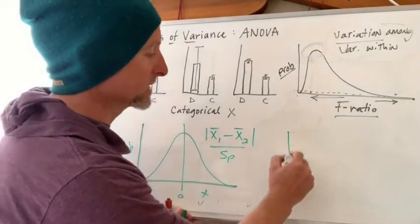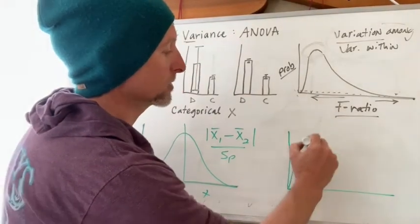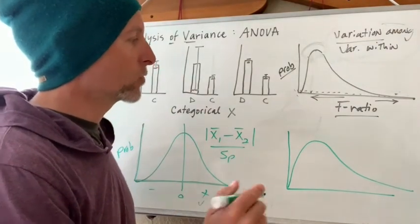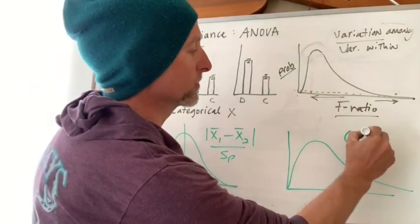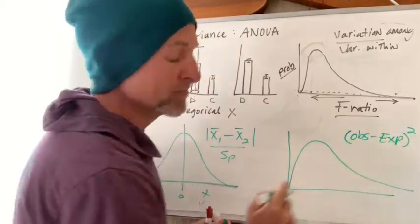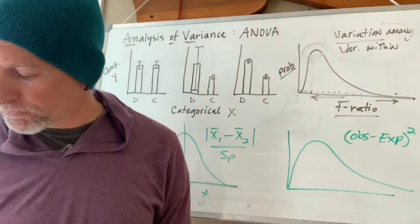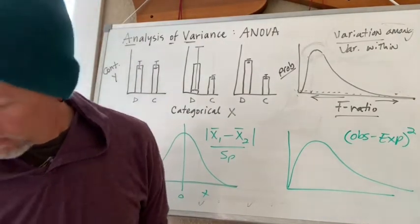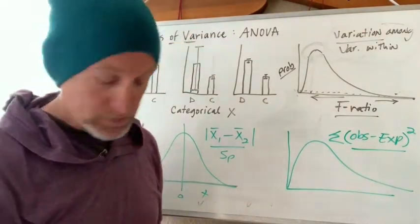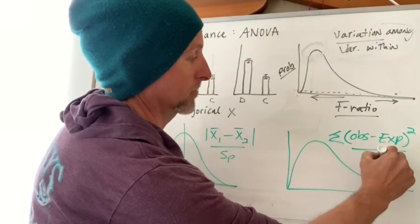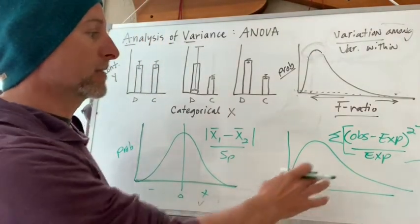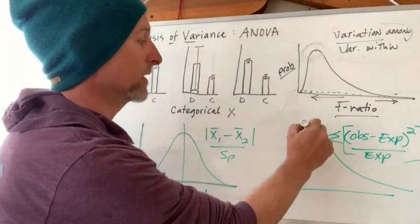In the case of chi-square, you have a distribution that looks kind of similar to the f-ratio a lot of the time. But of course, this is the result of your observed minus your expected values, if you remember back to chi-square, divided by your expected. So we end up with a big equation that gives us our chi-square value.